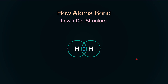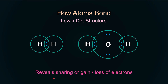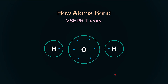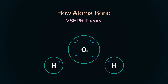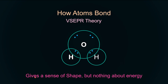We're not going to be using the Lewis dot structure, which tells us that atoms have valence electrons and they can come close together and share, gain, or lose electrons to form covalent or ionic bonds. We're not going to be exploring just that. We're also not going to be exploring deeply the VSEPR theory, which says that valence electrons, either paired or unpaired, distribute themselves so that repulsion between them is least — which gives a sense of shape, but nothing about energy of electronic configurations.